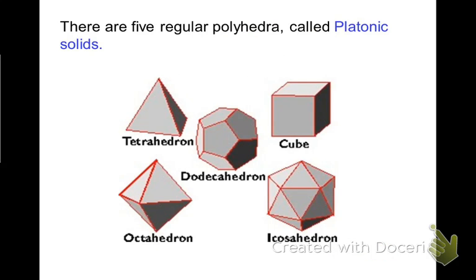We have five regular polyhedra that we call the Platonic solids. And here we are. You can see that they're made up of triangles, pentagons, and quadrilaterals or squares.